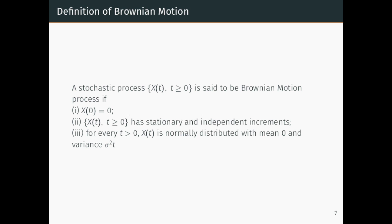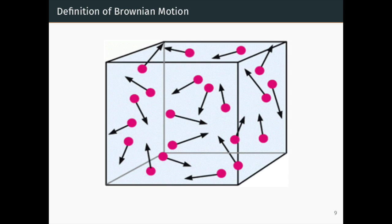The Brownian motion process, sometimes called the Wiener process, is one of the most useful stochastic processes in applied probability theory.